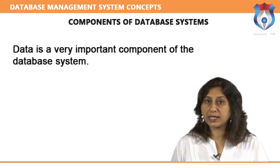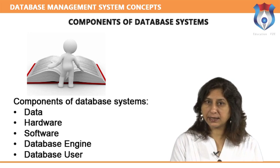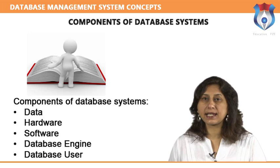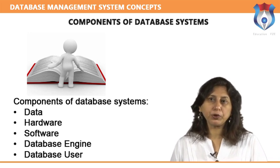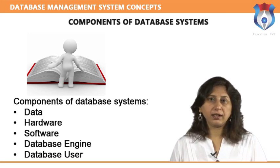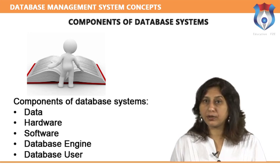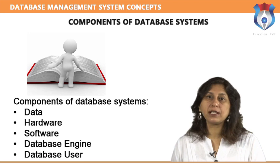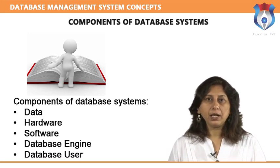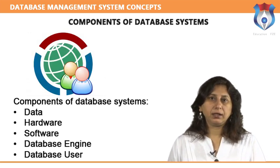Components of database systems: data is a very important component of the database system. Data acts as a bridge between the machine — the main parts, hardware and software — and the users who directly access it or access it through application programs. Data may be of different types. User data consists of tables called relations, where columns are called fields or attributes and rows are called records.